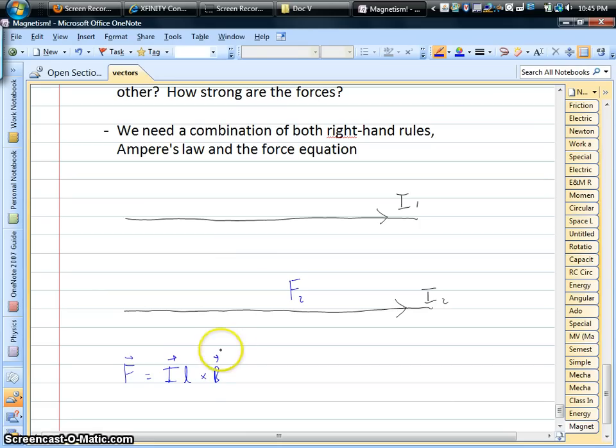So the key is, we need a magnetic field to affect the bottom wire. Where is it coming from? Well, it's the magnetic field coming from the top wire, from current 1. So current 1 is going to the right, and if you do the curly right-hand rule on that, the magnetic field is going to be looping around it in circles.